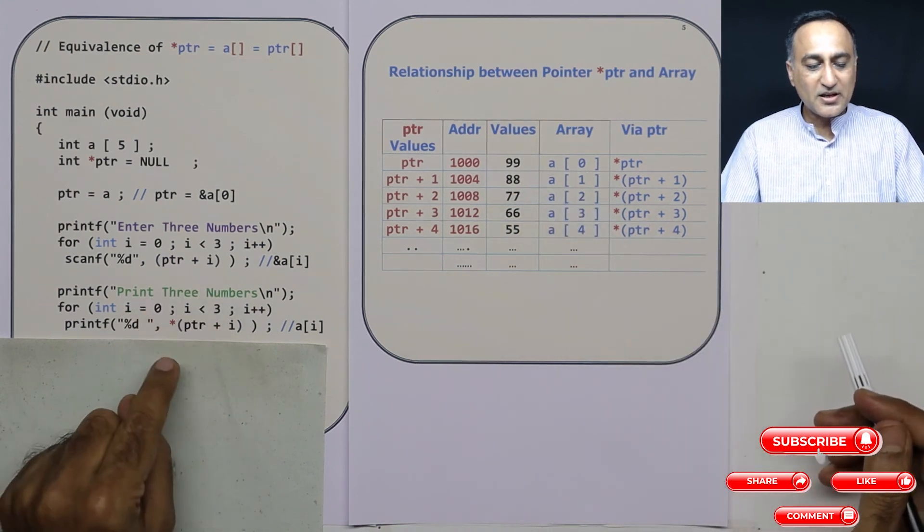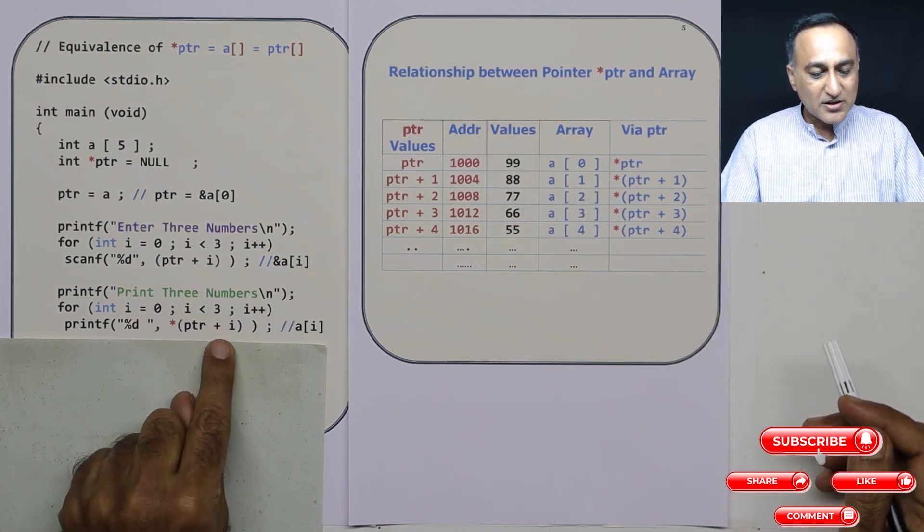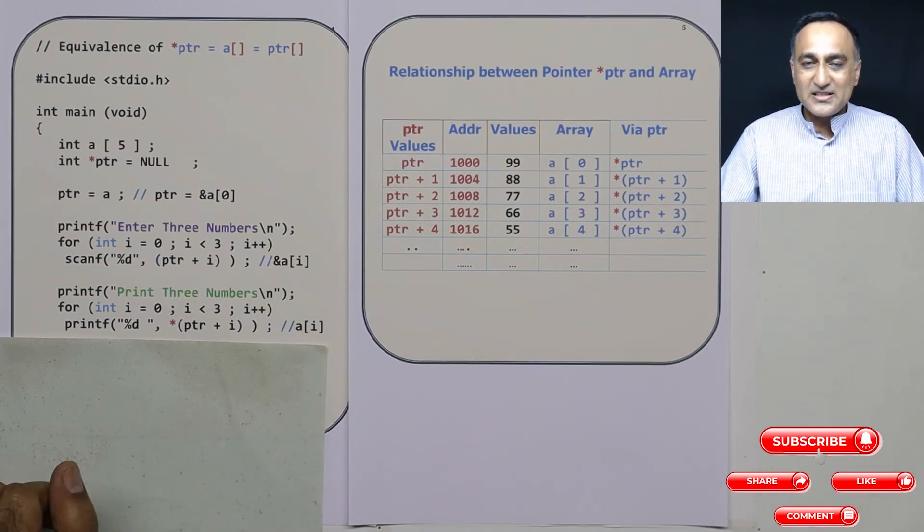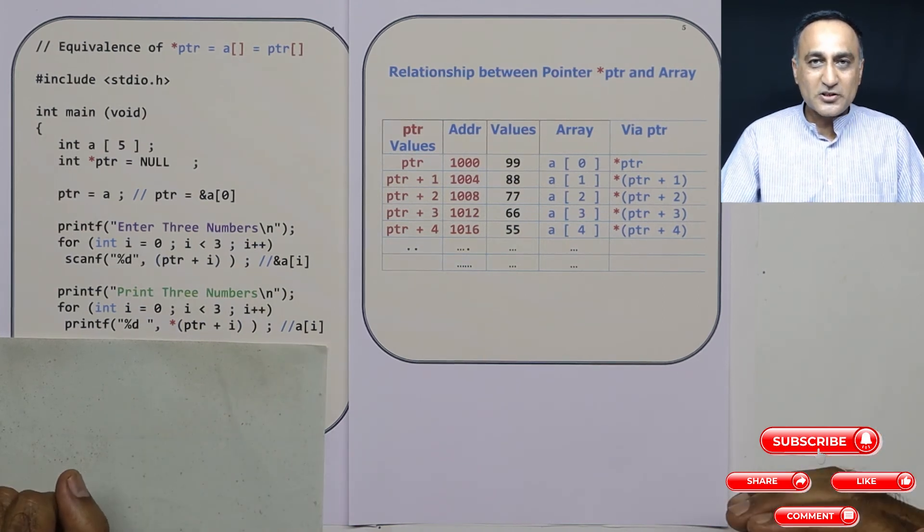So this way it's going to print three numbers. I can print it using this way, I can print it using a[i]. Please take a look at the demo that follows this video.